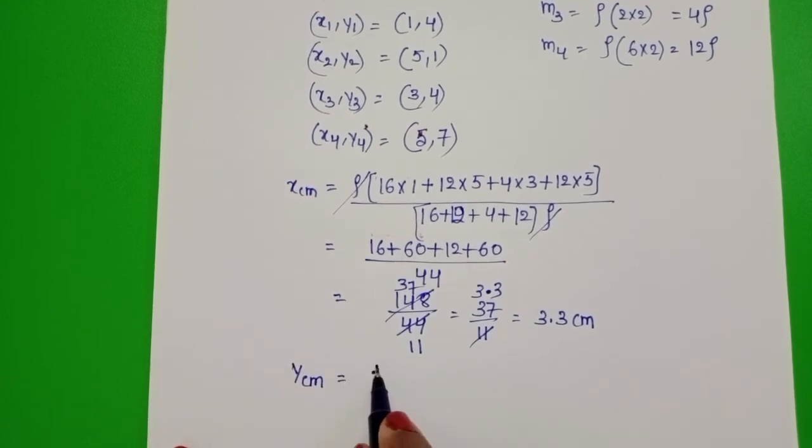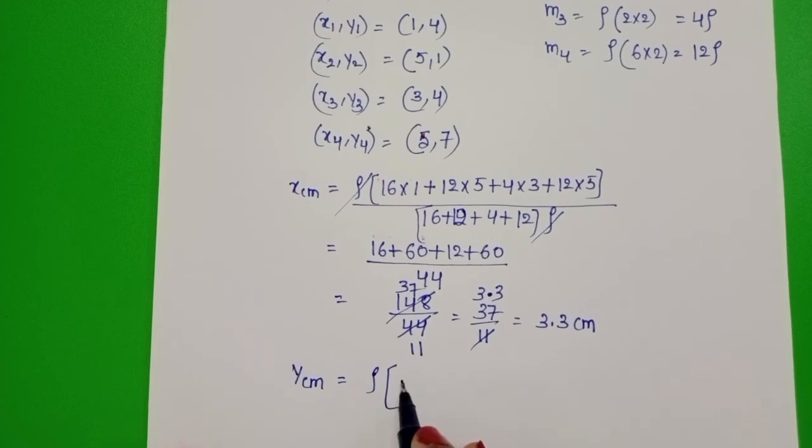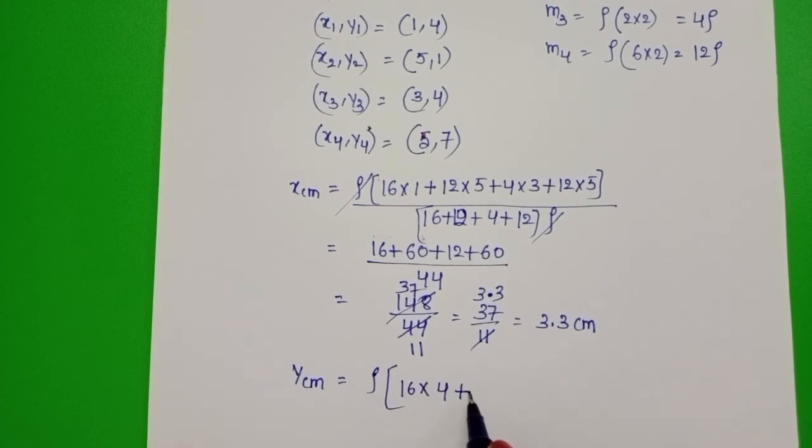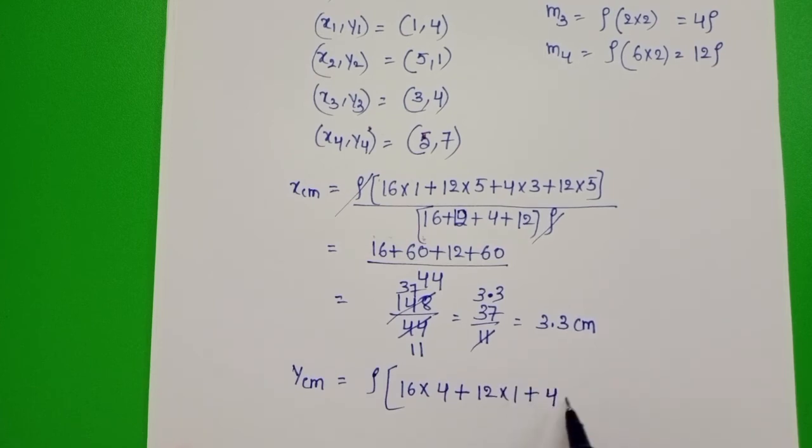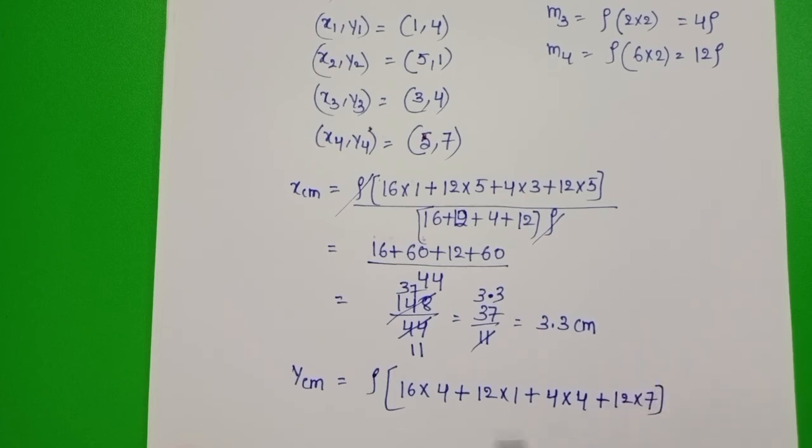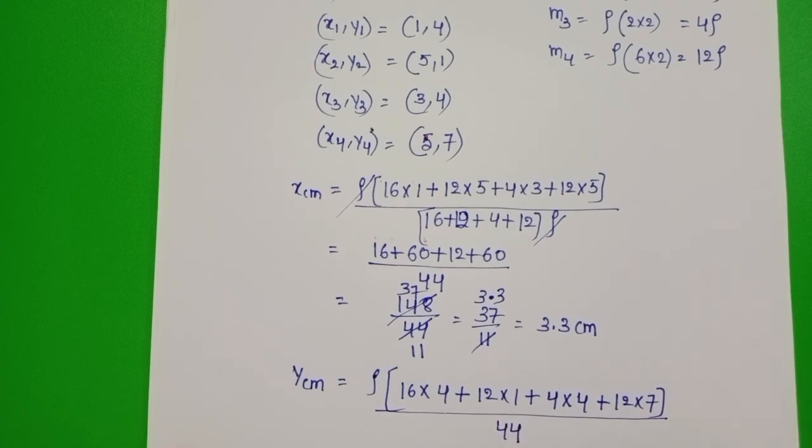And now, find out Ycm. Here also take rho common. M1 16 and Y1 is 4, plus M2 12, Y2 is 1. M3 is 4 and Y3 is 4, plus M4 12, Y4 is 7, by total mass 44.